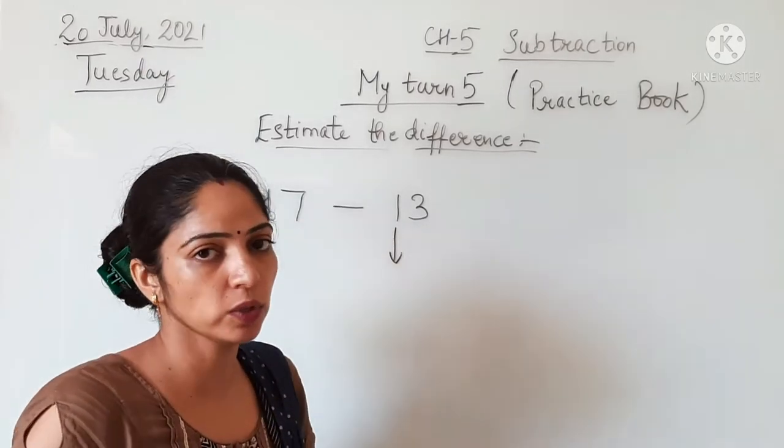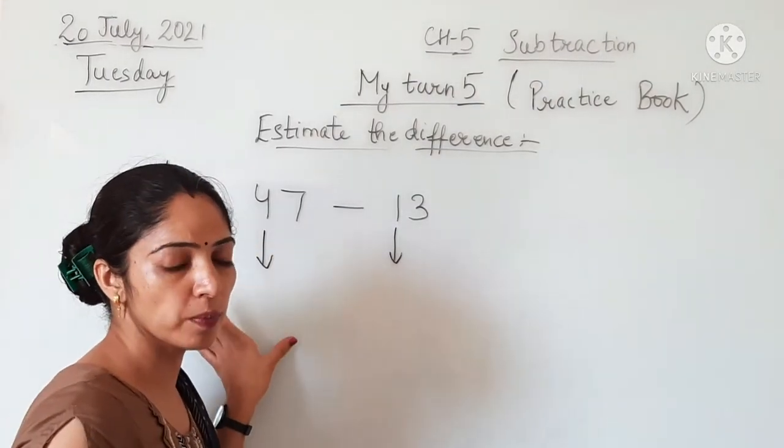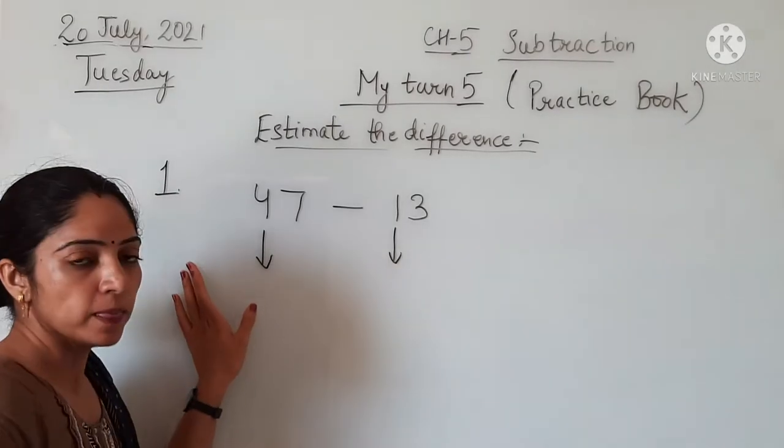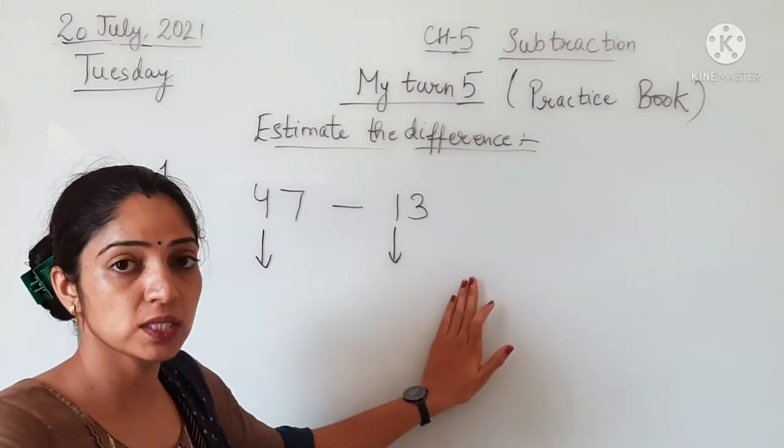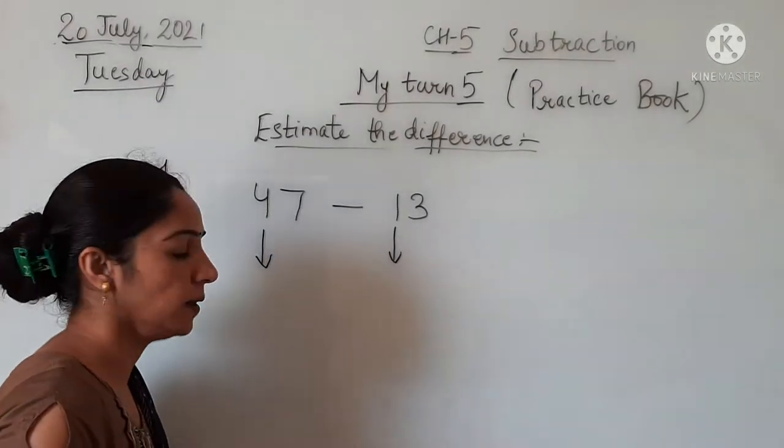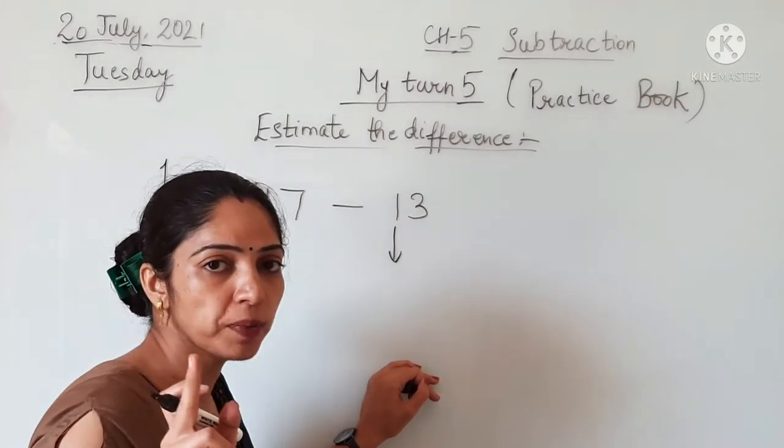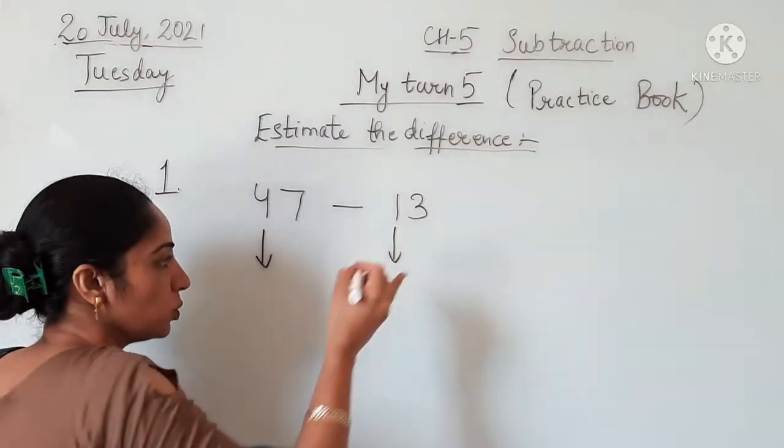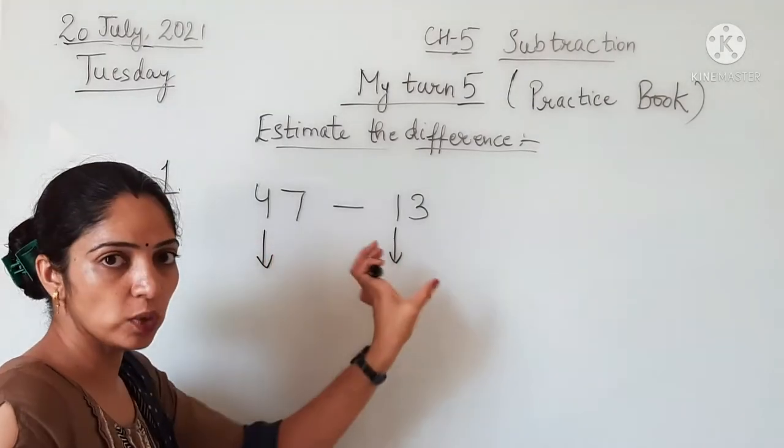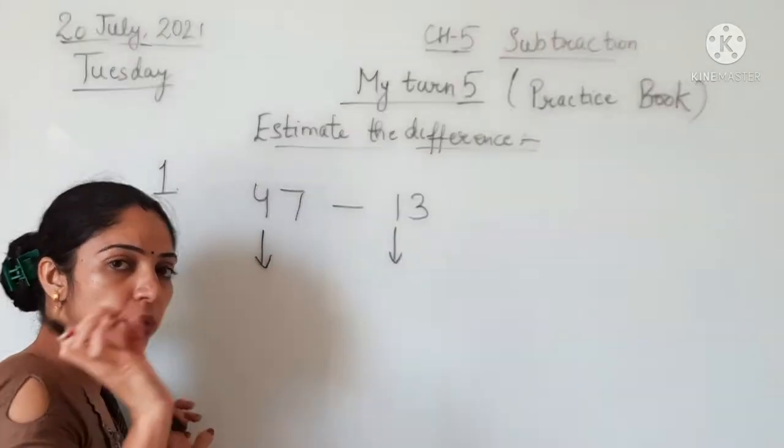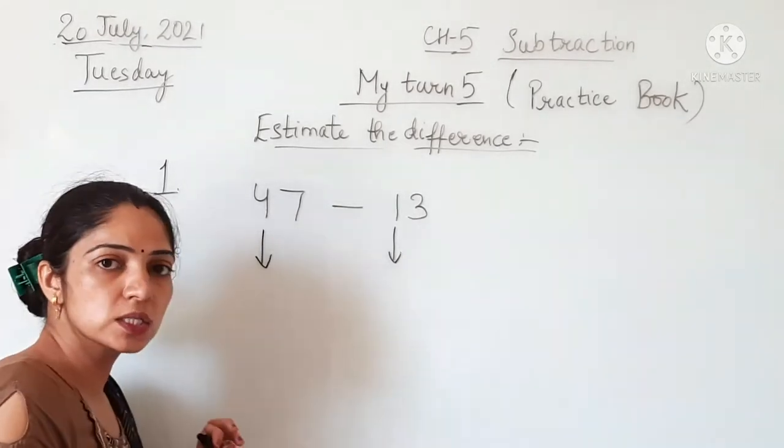Question number first, which has been done for you in your math practice book. Let's do it again: 47 minus 13. Now we have to round off this number. The arrow has been given to you in the number - the arrow which shows you which place you need to round off to.